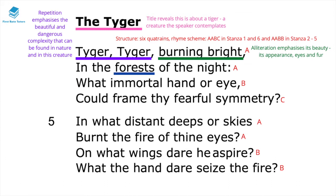In the second line, 'in the forest of the night,' there's the mention of nature, which is in line with William Blake's Romantic writing. In line two there's forests, line five mentions skies, line six fire, and line seven wings.